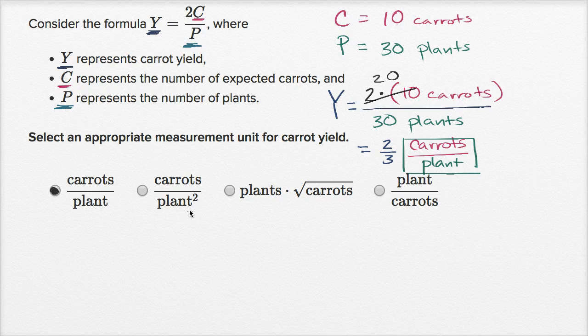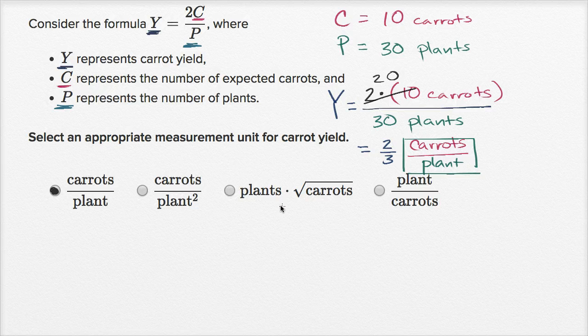Not carats per plant squared. That would have been the case if we were squaring this P over here. Or plants times the square root of carats. Well that would be if we were taking the square root up here and we weren't dividing by P, but we were multiplying by P.